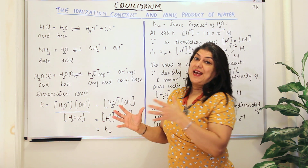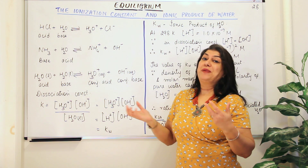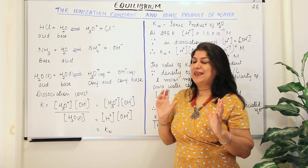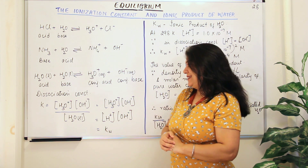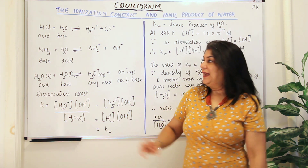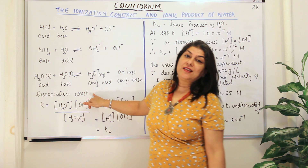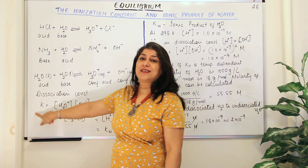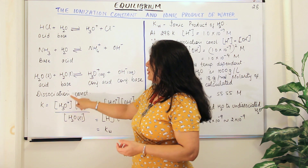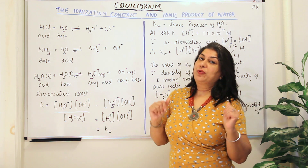An equilibrium will be established because when you have the same molecule, the difference between its acidic and basic character is very small — neither is a strong acid nor strong base. Both are very weak, so an equilibrium is established. Since the water molecules are dissociating, we call the equilibrium constant the dissociation constant, which is calculated as concentrations of products divided by concentrations of reactants, each raised to their stoichiometric coefficients.